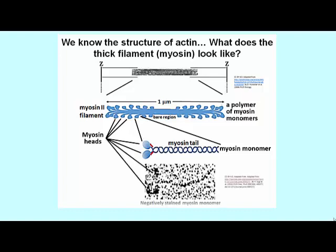Now we can see what a myosin monomer looks like in the electron microscope after it has been isolated and dissociated from myosin thick filaments. We recognize heads and a tail segment.